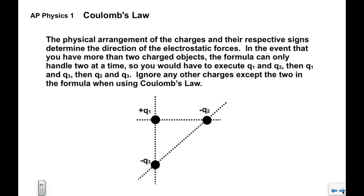In the event that you have more than two charged objects, the formula can only handle two at a time. So if you had three charges, you'd have to do the electrostatic force between one and two, then one and three, then two and three. Whichever two charges you're using to figure out the force between them, you ignore whatever else is there.